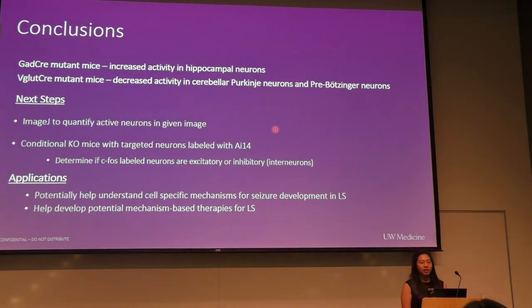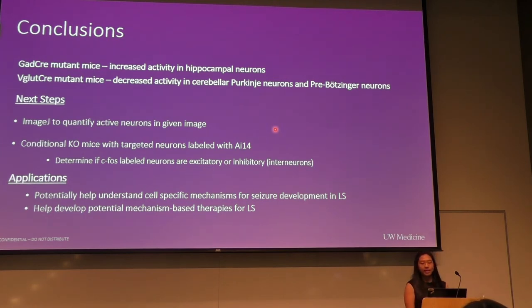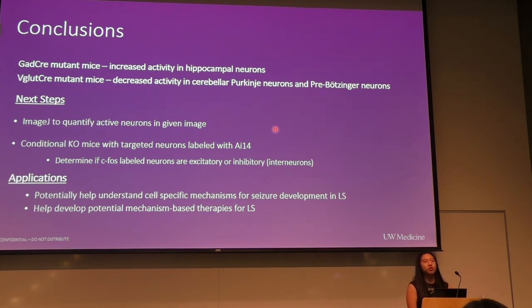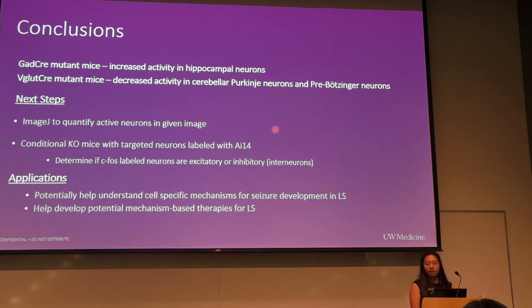Overall, the GAD-CRE mutant mice showed increased activity in hippocampal neurons, and this increase in spontaneous activity in GAD-CRE mutant mice may contribute to the seizure phenotype. In comparison, the VGLUT-CRE mutant mice showed decreased activity in both the cerebellum — specifically Purkinje neurons — which may contribute to their ataxia and motor impairment, as well as in pre-Bötzinger neurons, which may contribute to the respiratory dysfunction.